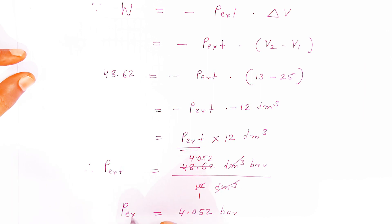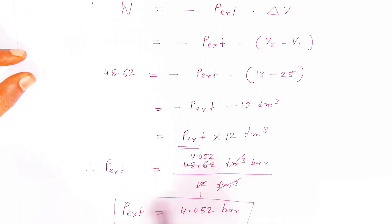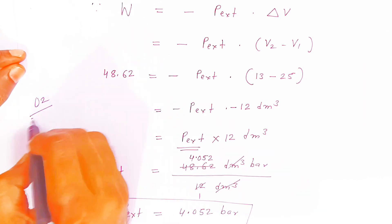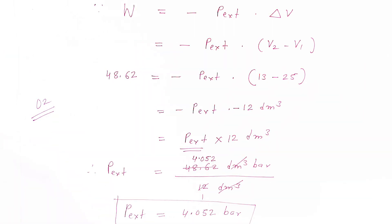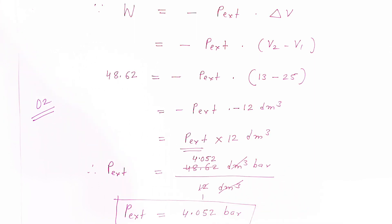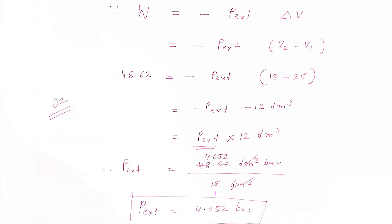This is how you calculate the external pressure. It is a very simple 2-marks question in examinations. The P external value is 4.052 bar. Like my video, please share it and subscribe. Thank you very much. Have a nice day. God bless you.